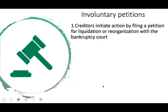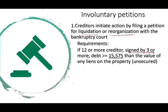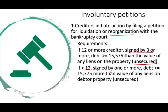An involuntary petition is when a creditor comes after you. The creditor initiates action by filing a petition for liquidation, Chapter 7, or reorganization, Chapter 11. If you have 12 or more creditors, three must sign the petition, and those three must have an unsecured debt of more than $15,575. These figures change periodically. If you have fewer than 12 creditors, one or more signatures suffice, with unsecured debt greater than $15,575 exceeding the value of any liens on the debtor's property. The court will accept the petition if it sees evidence the debtor is not paying its bills on time.